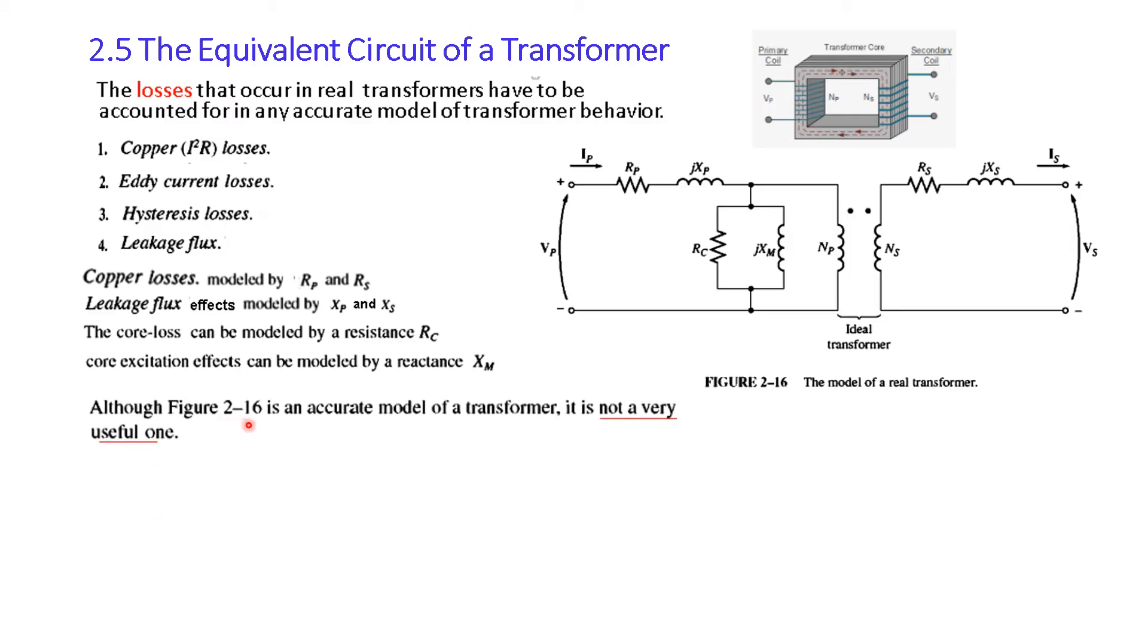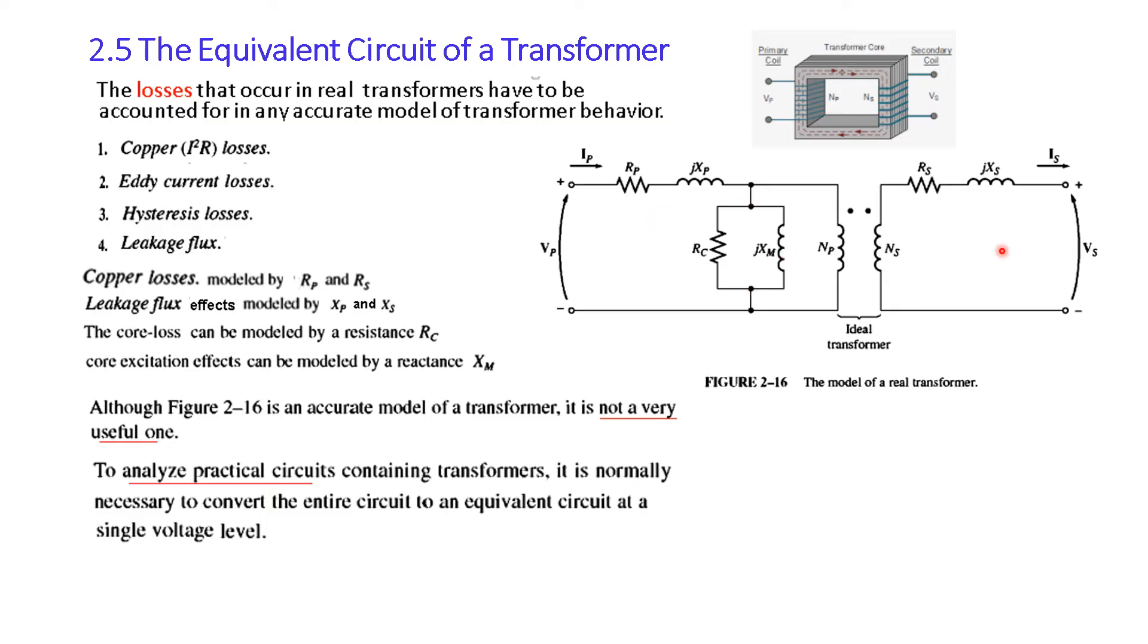Now, although this figure 2-16 is an accurate model of a transformer, it is not a very useful one. Why? Because to analyze practical circuits containing transformers, it is normally necessary to convert the entire circuit to an equivalent circuit at a single voltage level. Now if you see the voltage here in the secondary side is different from the voltage in the primary side. So we are talking of two voltage levels here. So for solving we want to convert them to a single voltage level.